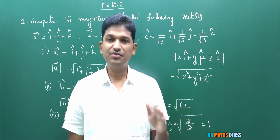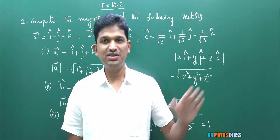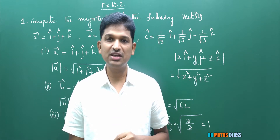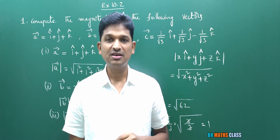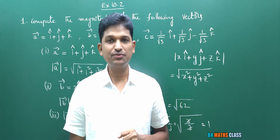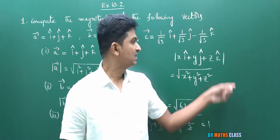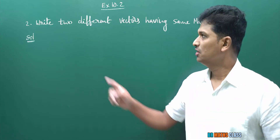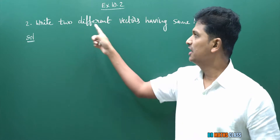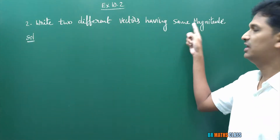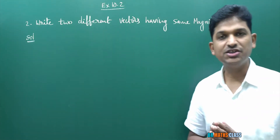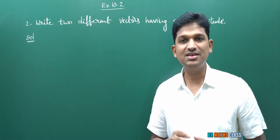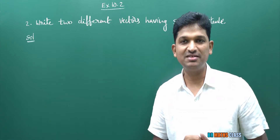Calculating the magnitude of a vector is important — throughout this chapter, most of the time we will calculate magnitudes of given vectors. So this formula you need to know. Now observe the second question: write two different vectors having the same magnitude. This is a very easy question.